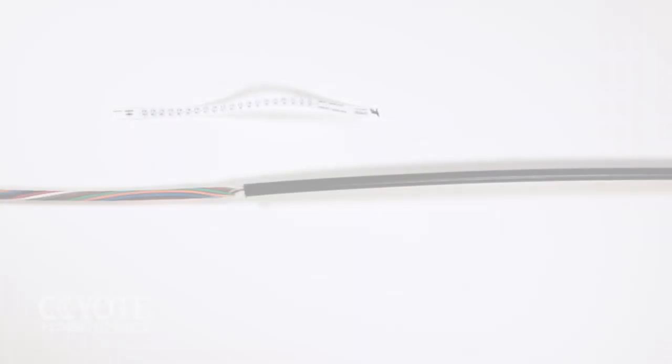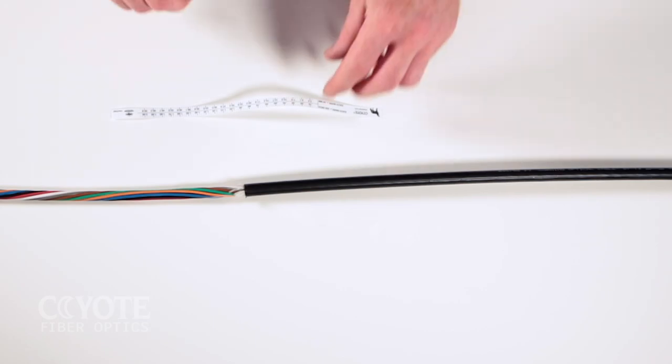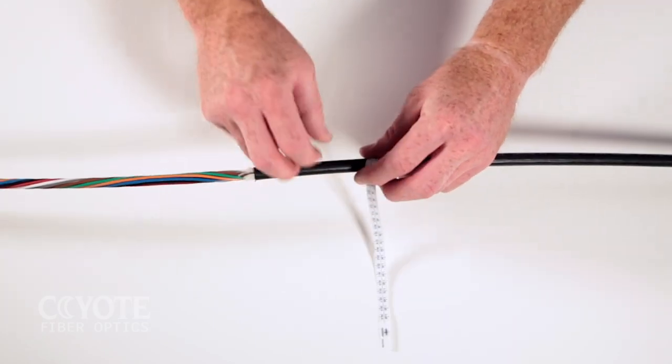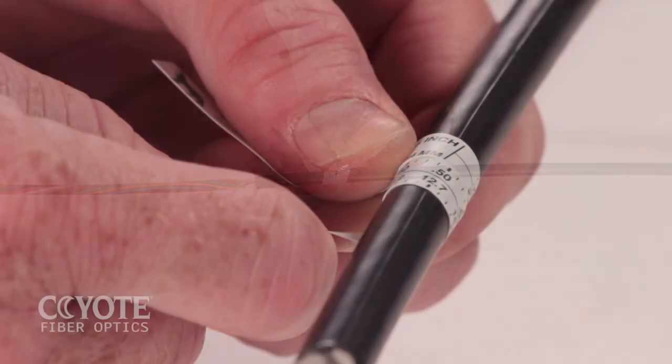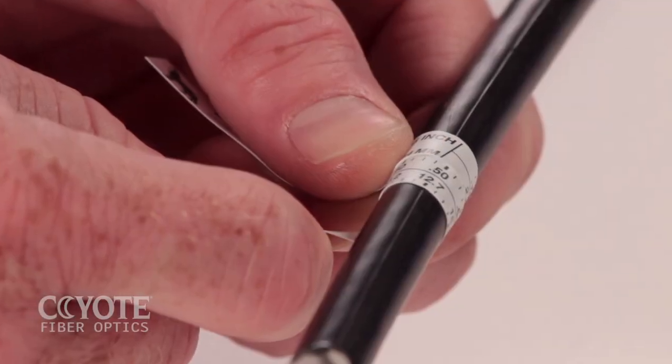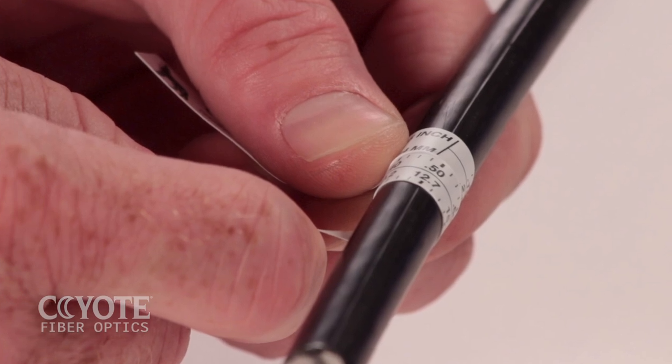The first step to properly assemble the Coyote dome closure is verifying your cable diameter. A measuring tape is provided in every grommet kit. This tape indicates my cable has a .48 inch OD.